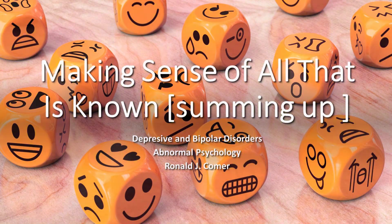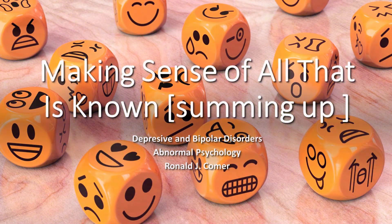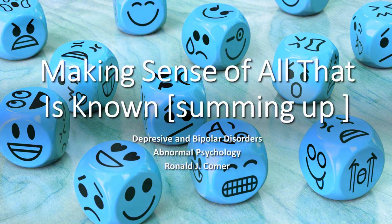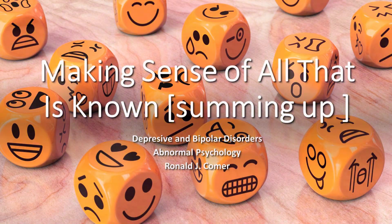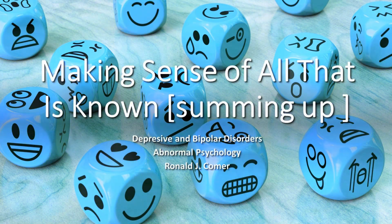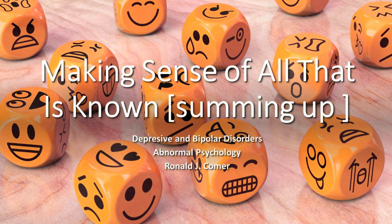As with unipolar depression, clinicians and researchers have learned much about bipolar disorders during the past 35 years. But bipolar disorders appear to be best explained by a focus on one kind of variable: biological factors. The evidence suggests that biological abnormalities, perhaps inherited and perhaps triggered by life stress, cause bipolar disorders. Whatever roles other factors may play, the primary one appears to lie in this realm. Thus, one kind of disorder may result from multiple causes, while another may result largely from a single factor.